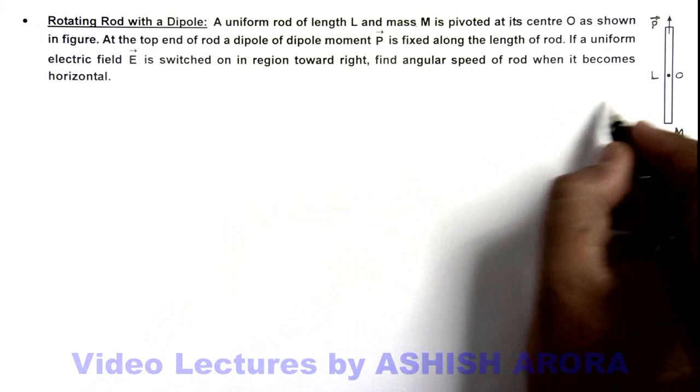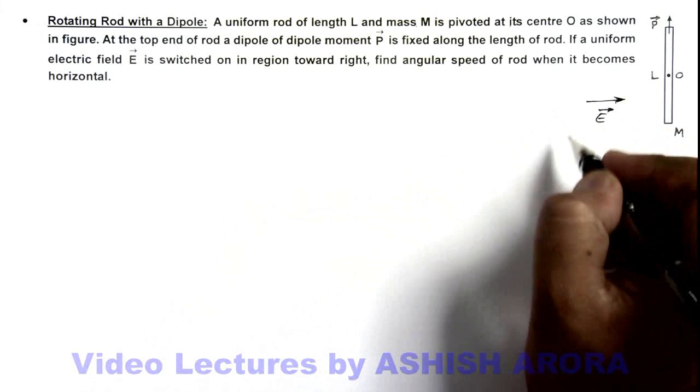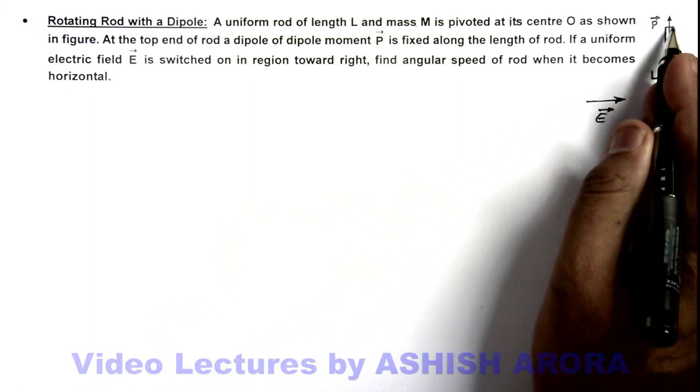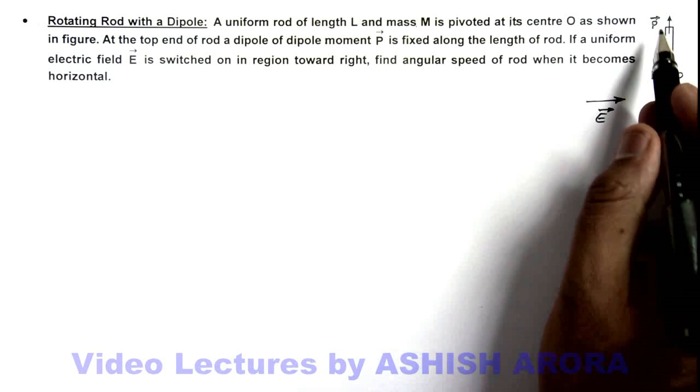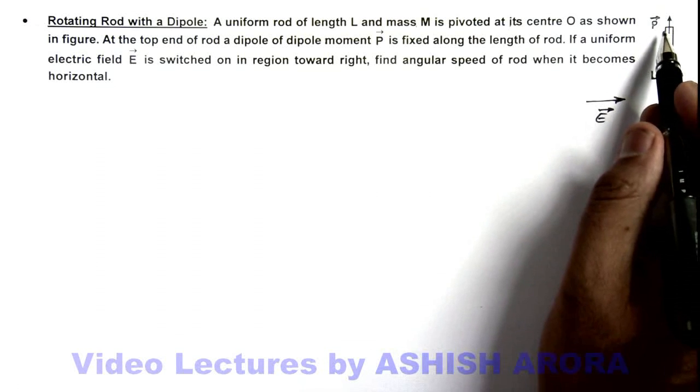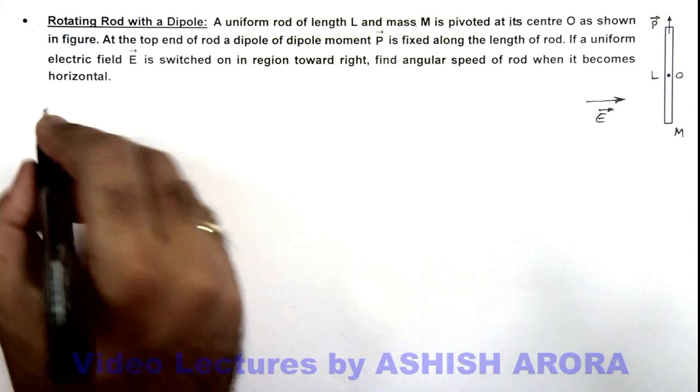If we apply an electric field E vector toward right, this will exert the torque on this dipole. As we have studied, the torque on a dipole will be a couple and it does not depend on the axis of rotation. So P cross E will be the torque and it'll rotate the rod in clockwise sense.